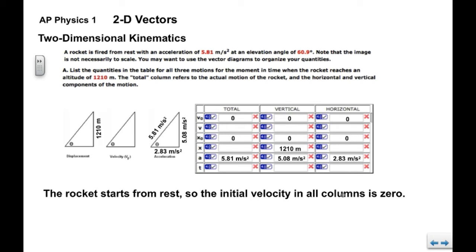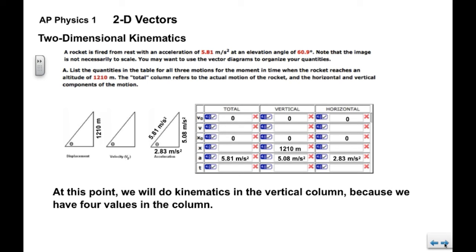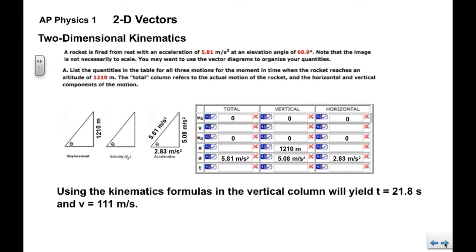Now, the rocket starts from rest so the initial velocity in all columns is zero. Now, you'll notice that in the vertical column we have four values. So we can do the kinematics. What we'll find is that the time t is 21.8 seconds and the final velocity is 111 meters per second.